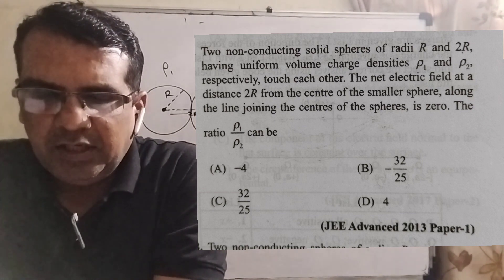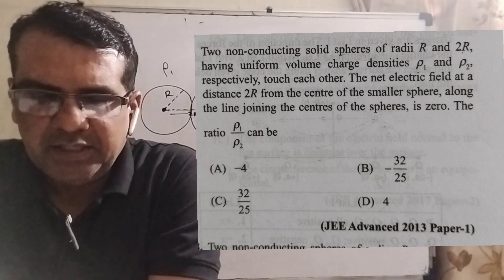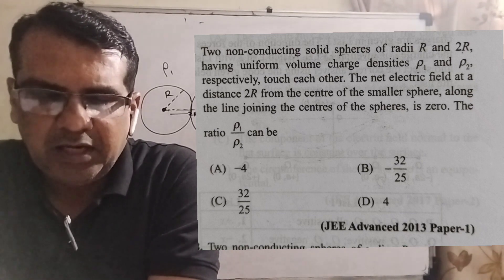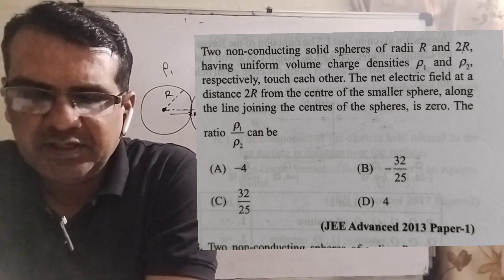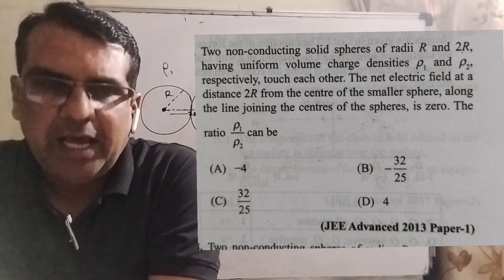They touch each other. The net electric field at a distance 2r from the center of the smaller sphere along the line joining the centers of the spheres is 0.